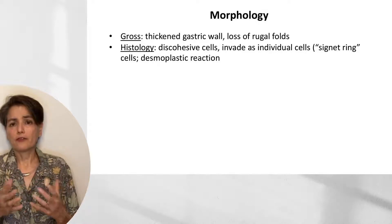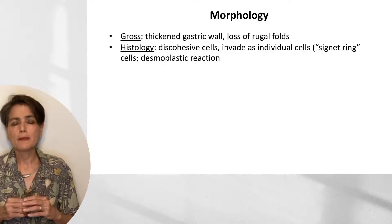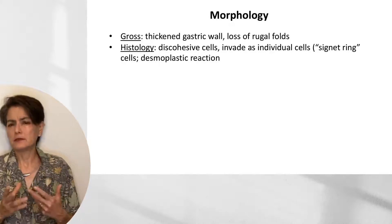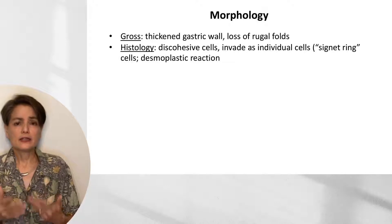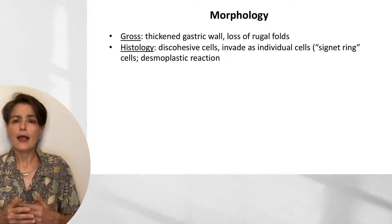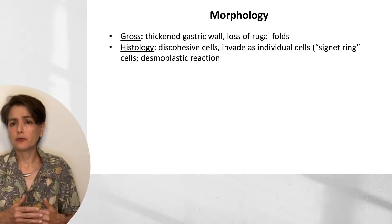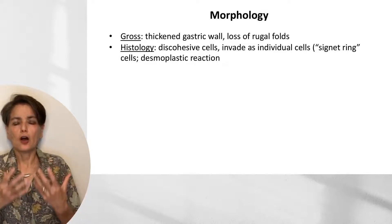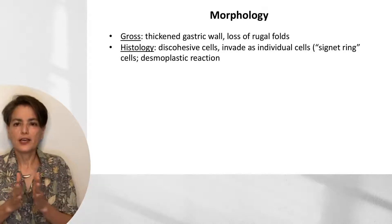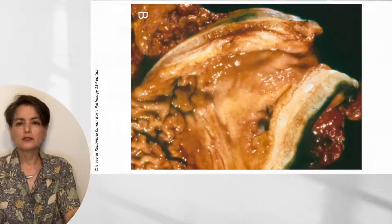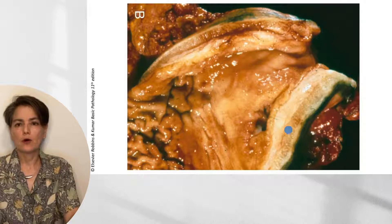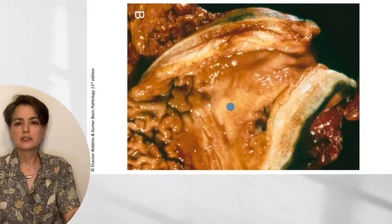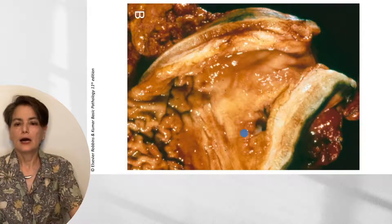Histologically and grossly: the gross shows a thickened gastric wall visible on radiologic imaging. The endoscopist may see little or nothing — perhaps a small ulcer and loss of rugal folds. This is caused by diffuse invasion of individual cells creating a profound desmoplastic reaction that thickens the wall and effaces rugal folds. On this gross section, the gastric wall is incredibly thick. Normal rugal folds are visible in one area, with complete loss in the affected region.